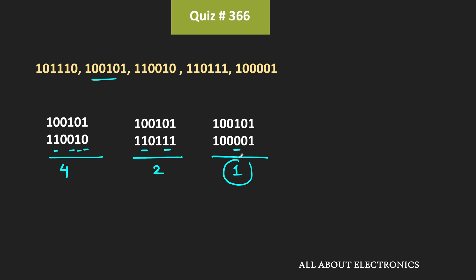This will be the minimum Hamming distance between the given codes, because if the Hamming distance were 0, both code words would be equal. That means the Hamming distance cannot go below 1, so there is no need to compare the remaining codes. We can say that for the given code words, the minimum Hamming distance, d_min, is equal to 1.